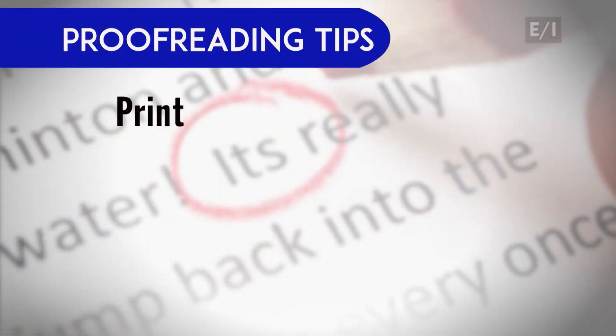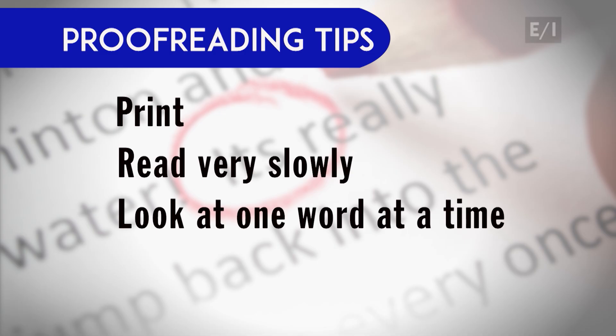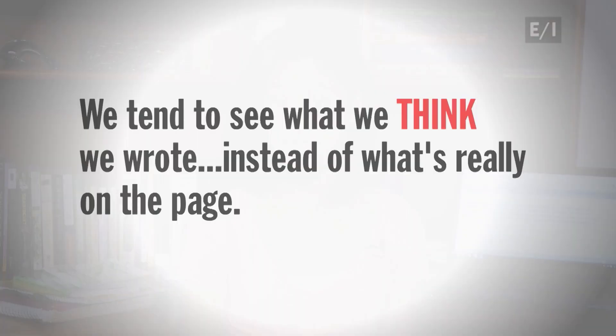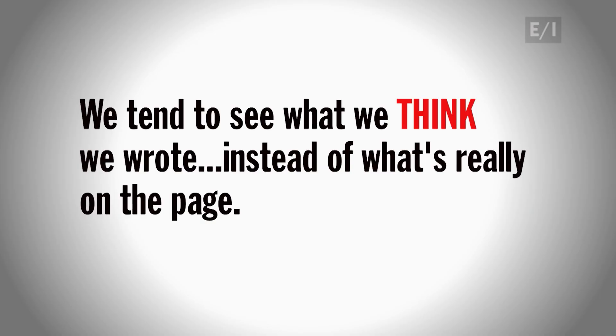Sure, you can deal with that problem by disabling your autocorrect, but the best way to make sure what you wrote is correct is to carefully proofread. Here are some tips: print what you wrote — most of us find it easier to proof on paper than on the computer screen. Read very slowly, look at one word at a time, and if possible, read out loud. Experts say our brains actually make it hard for us to catch our mistakes — we tend to see what we think we wrote instead of what's really on the page. The best proof that proofreading works is to give it a try. I'm Kristin, here to help you make the grade.